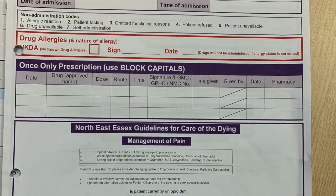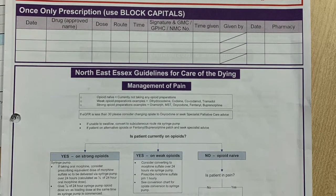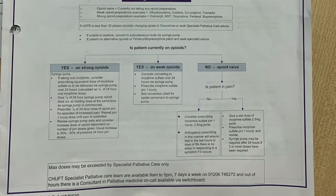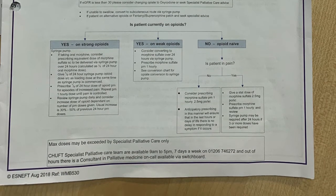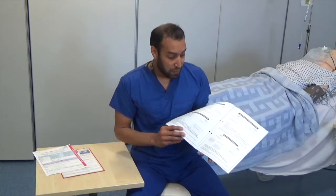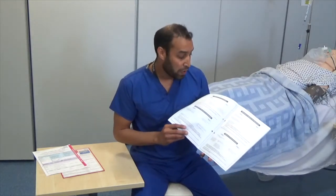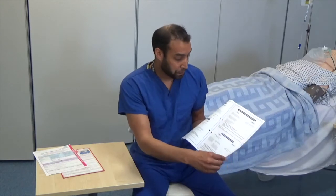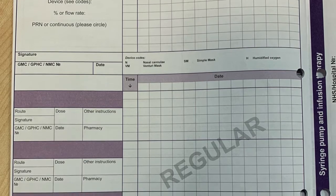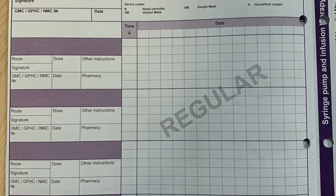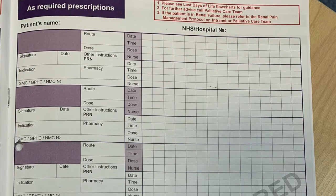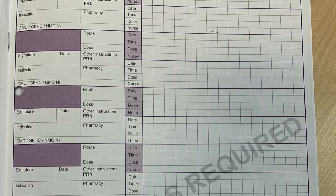For these patients, make sure that the appropriate addressograph boxes are completed and their allergy status is also completed. This is an example of the prescription chart. For these patients we generally give three drugs: glycopyronium, midazolam, and morphine. These can be completed in the as-required prescriptions, and if more is required, the palliative care team can be contacted and we can start these patients on syringe drivers.